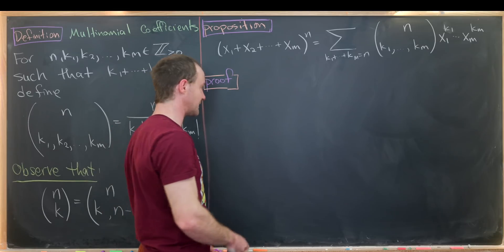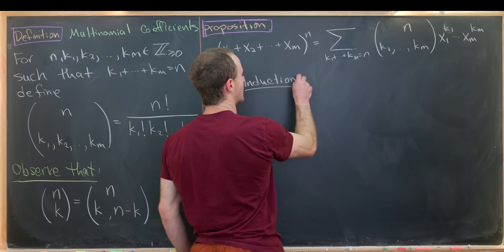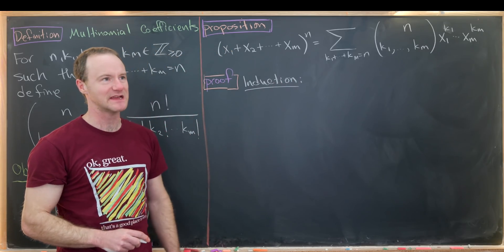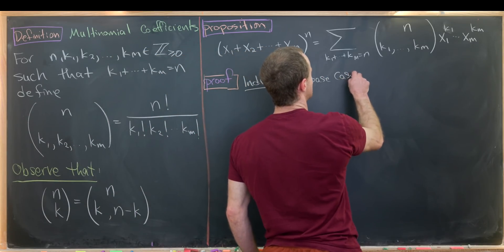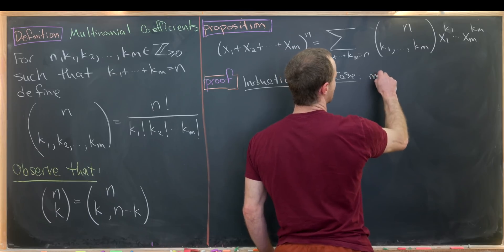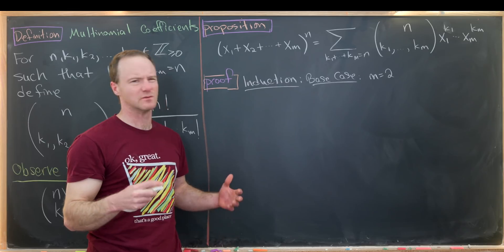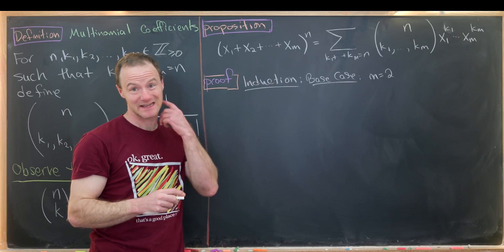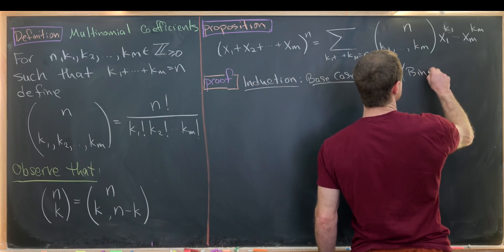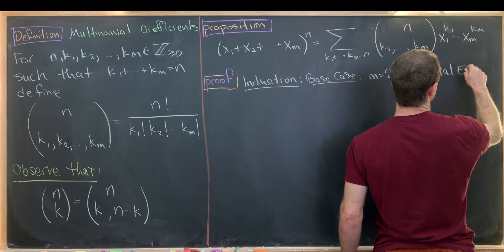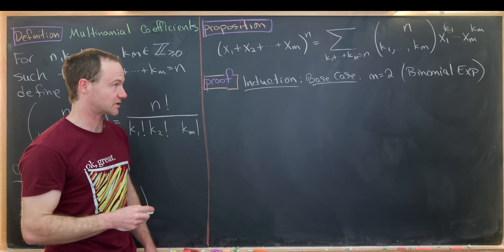We're going to do this proof by induction, but we will not worry about the base case because the base case is just the binomial theorem. The base case can be taken as the m equals 2 case — you could also more trivially take it as the m equals 1 case, but that's not super interesting. So we take it as the m equals 2 case, which is just the binomial expansion, which we'll take to be a proven result already.